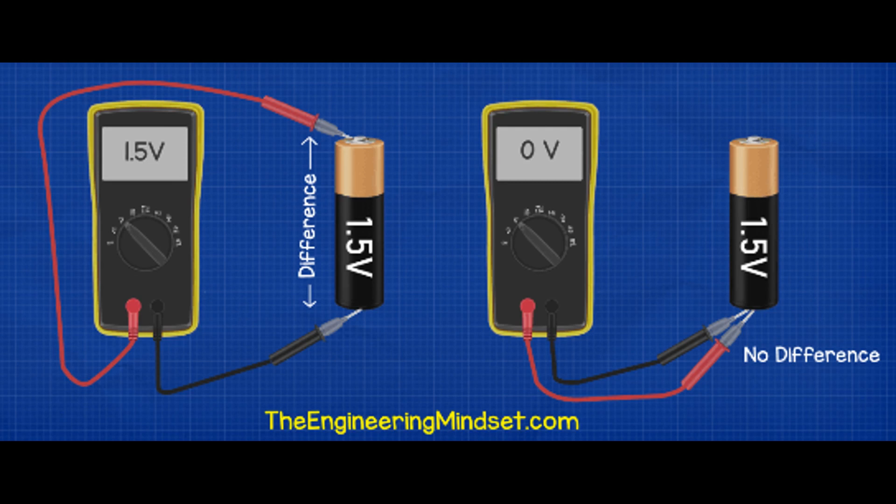In summary, electric current is the flow of charged particles through a conductor in response to an electric field. It's a vital concept in understanding how electricity works and is essential for designing, analyzing, and working with electrical circuits and systems.